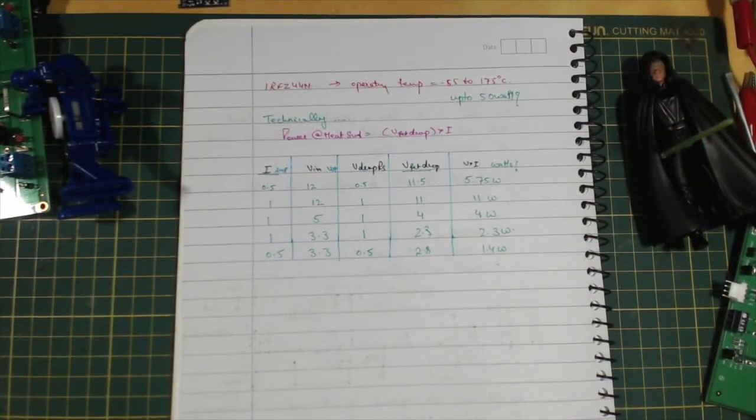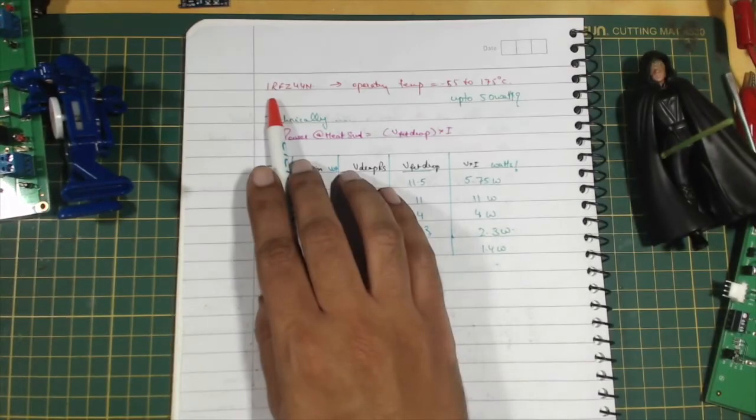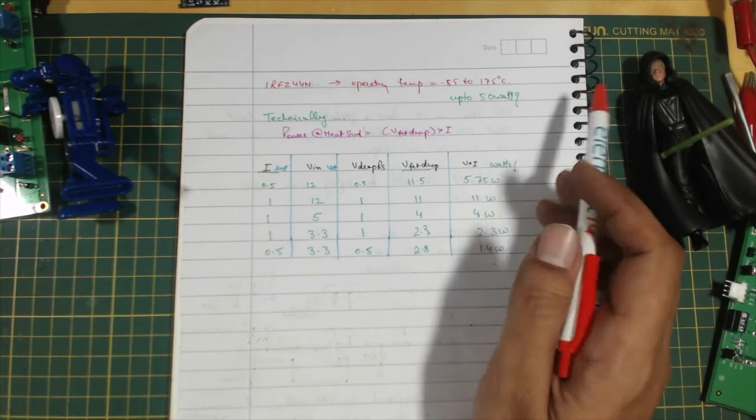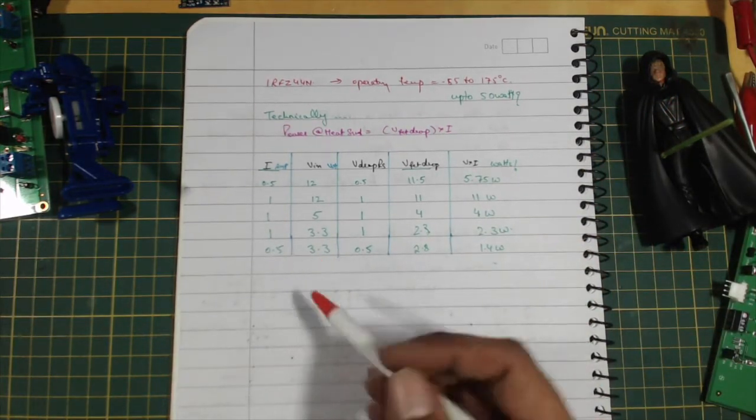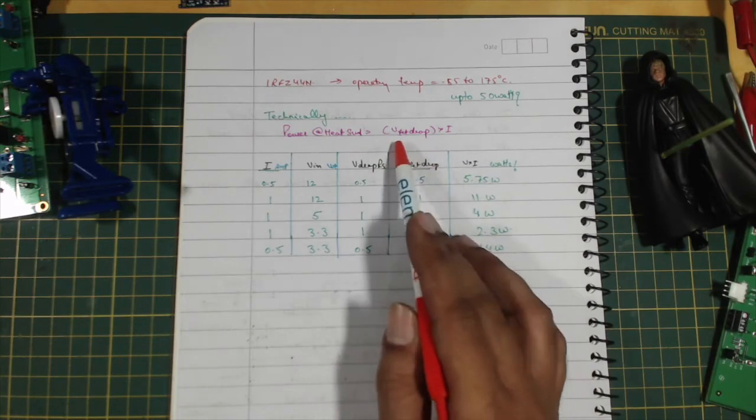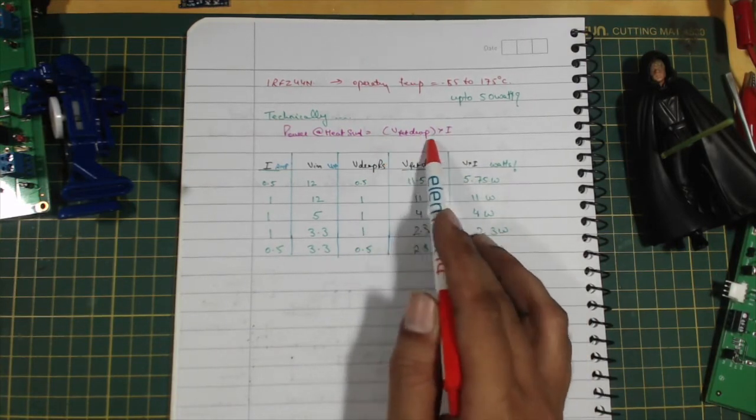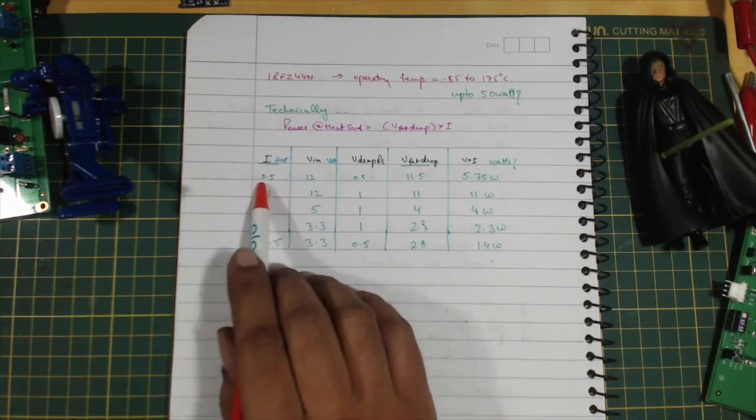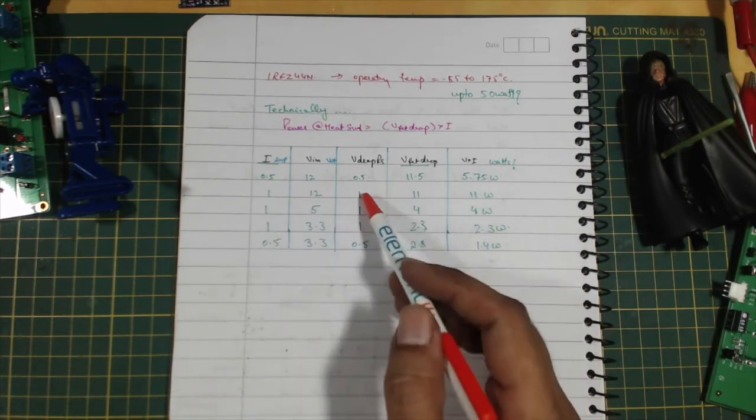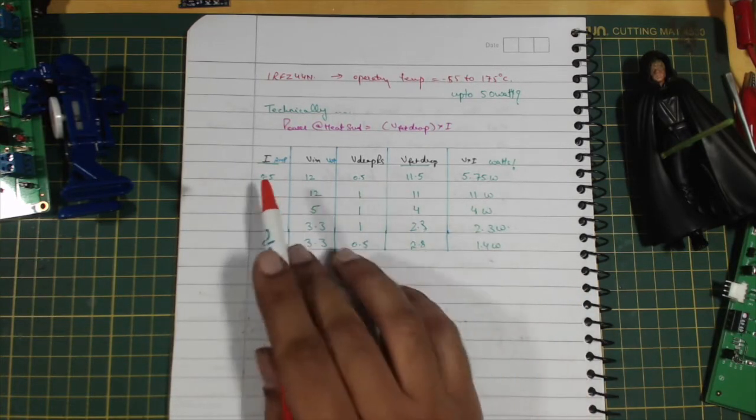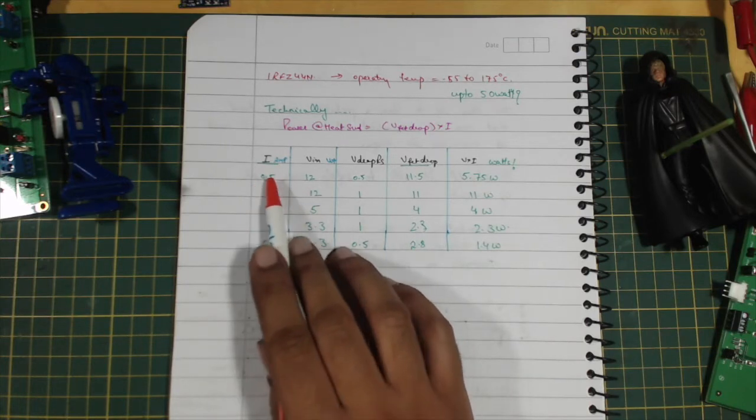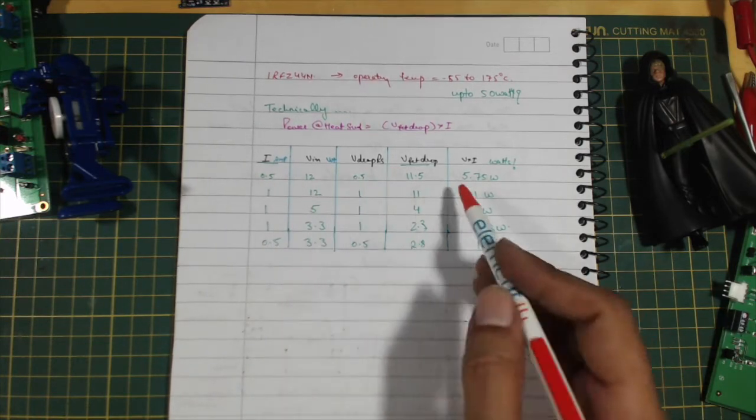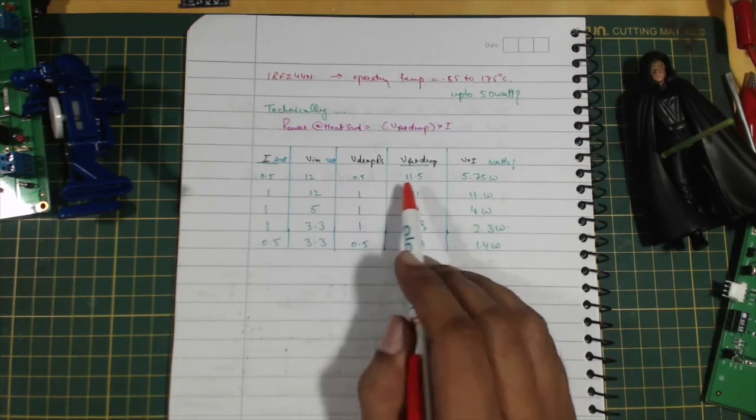Alright, a quick set of calculations. What I've got is the IRFZ44N. It can operate up to 175 degrees and at 50 watts of power. So technically if I get a heat sink, it will have the drop multiplied by I, that's the V into I power dissipation equation. I've done a few basic calculations. If I want to draw say half an amp at 12 volts, that means the drop across my sense resistor is going to be the current because it's a one ohm resistance. So V into I, sorry, I into R. So resistance one multiply by 0.5 and then I get a drop of 12 minus this, 11.5, that's 5.75 watts.